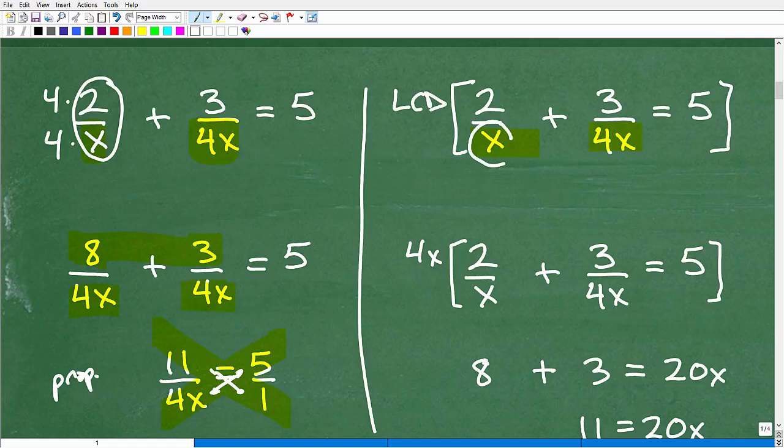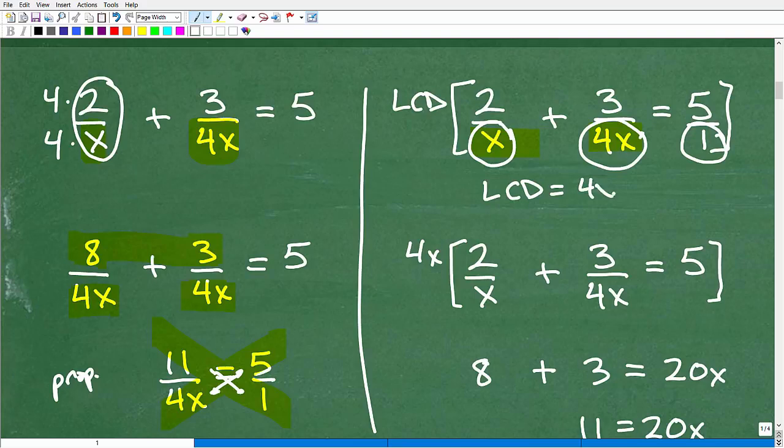So this is a denominator, this is another denominator, and then 5 over here is really 5 over 1. What's the lowest common denominator given x, 4x, and 1? Well, you need to know how to find the LCD expressions where they have variables, where the denominators are variables. I actually have plenty of videos on this in my algebra playlist. But this is 4x. So 4x is the LCD.